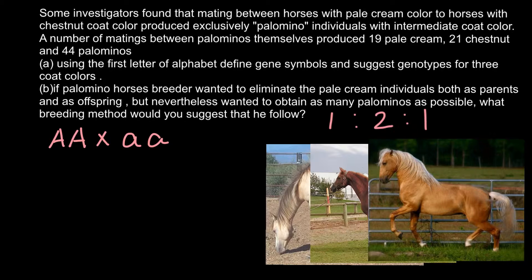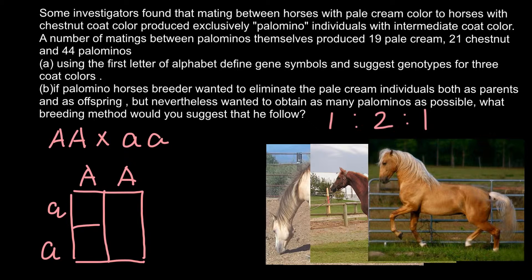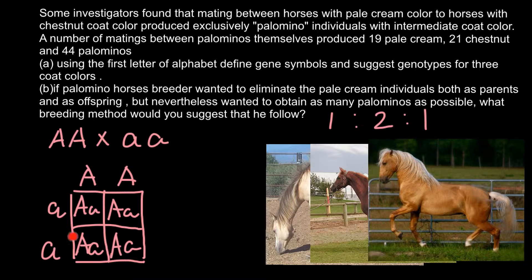In the F1 generation, all progeny are going to be heterozygous. If we build a Punnett square, we can see that 100% of the progeny would be heterozygous — having one dominant allele and one recessive allele. Because we have incomplete dominance, one parent is chestnut, the other is pale cream, and all progeny would show the intermediate Palomino color.